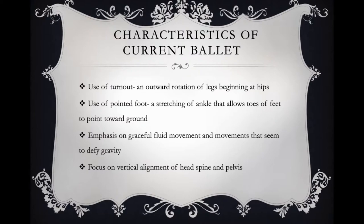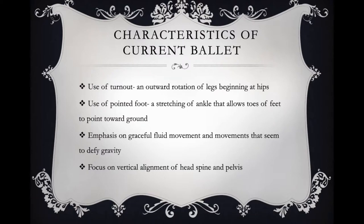Characteristics of ballet as we know it: the turnout, which is an outward rotation of your legs beginning at the hip; use of a pointed foot, which is a stretching of your ankle with your toes pointing down; an emphasis on graceful, fluid movement and movement that seems to defy gravity. There's a focus on vertical alignment — the head, spine, and pelvis are in alignment, making one line.